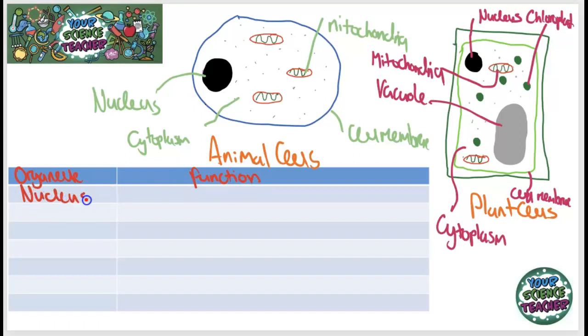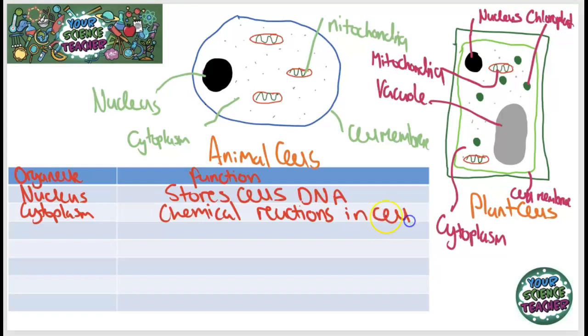And because it stores the cell's DNA, it controls basically all the actions of that cell. Next, let's have a look at our cytoplasm, which was that jelly-like substance in the centre. This is where all chemical reactions in the cell take place. Next, let's have a look at the mitochondria. The mitochondria is the site of respiration. This is what gives our cell energy. Then we have our cell membrane. And the cell membrane acts a bit like a bouncer. It allows substances to enter and leave the cell.